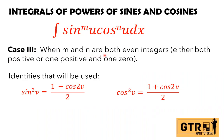So when m and n are both even integers — either both positive or one positive and one zero — if one is zero, that means the integrand is sine only or cosine only. Or if we have both, then both the exponents must be even. If not, we will use case 1 and case 2.